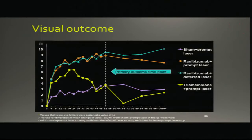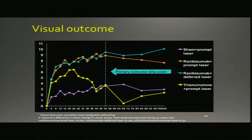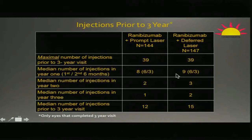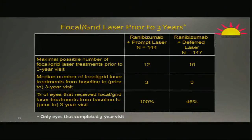We'll go to DME quickly. This is a typical table all of us use for presentations — mean number of injections is eight to nine monthly. So again in DME, the requirement to adhere to protocol is very, very important.